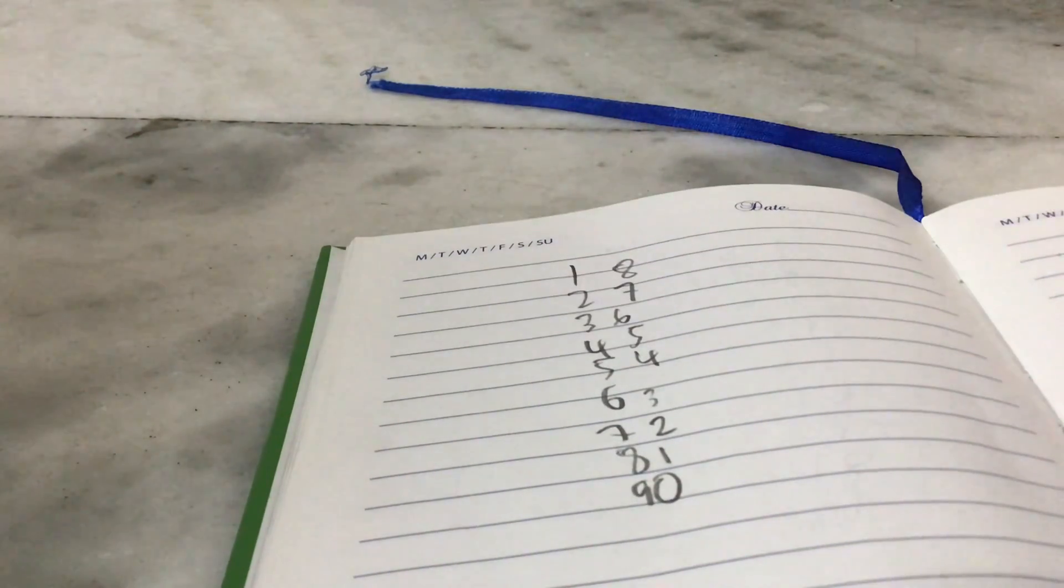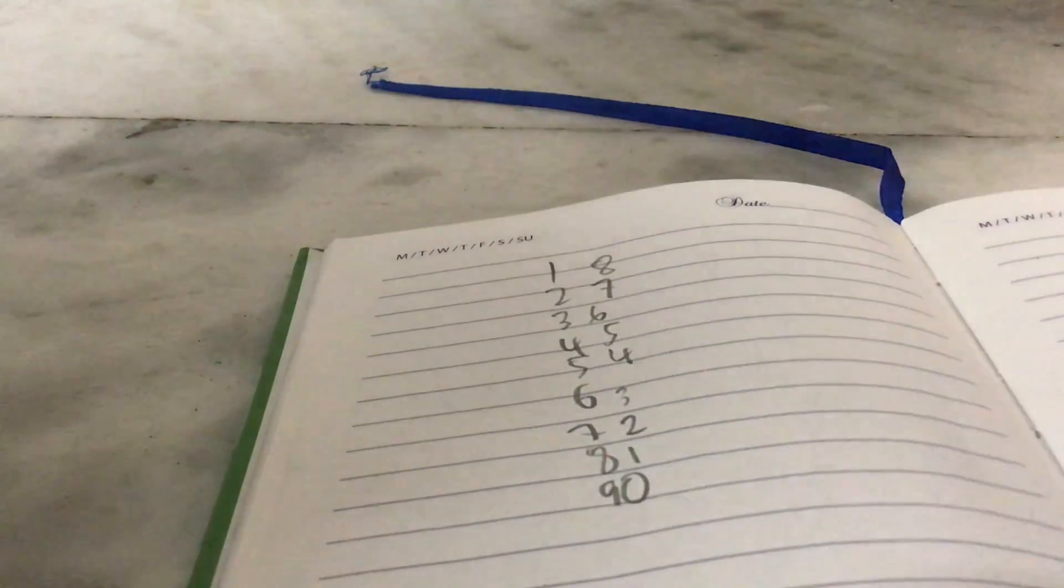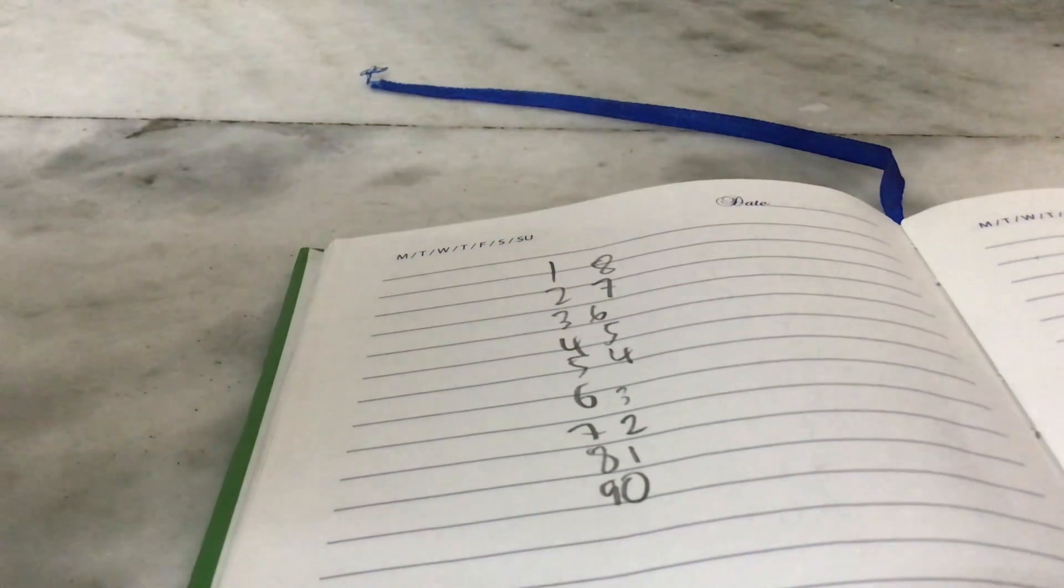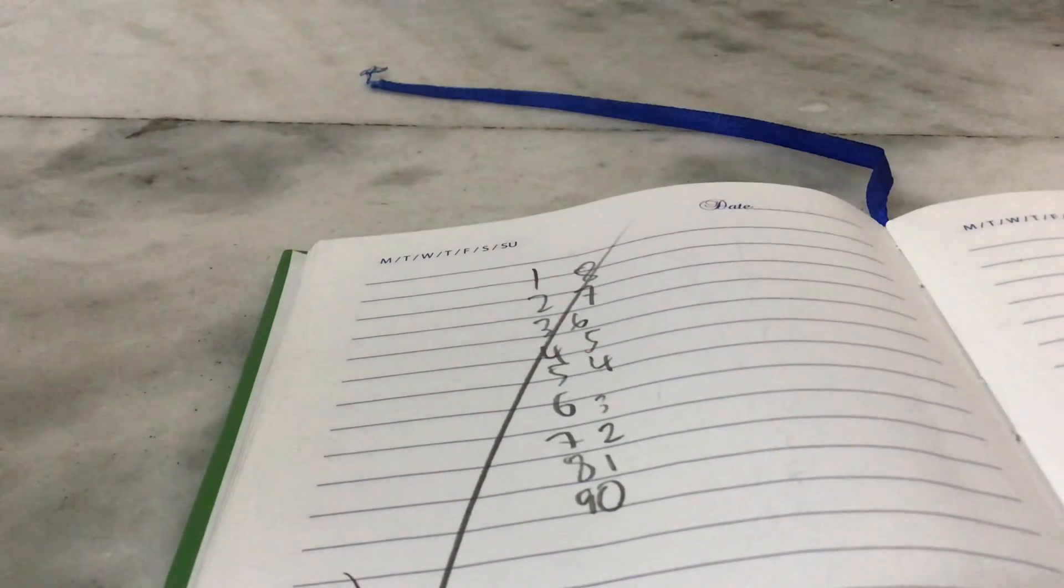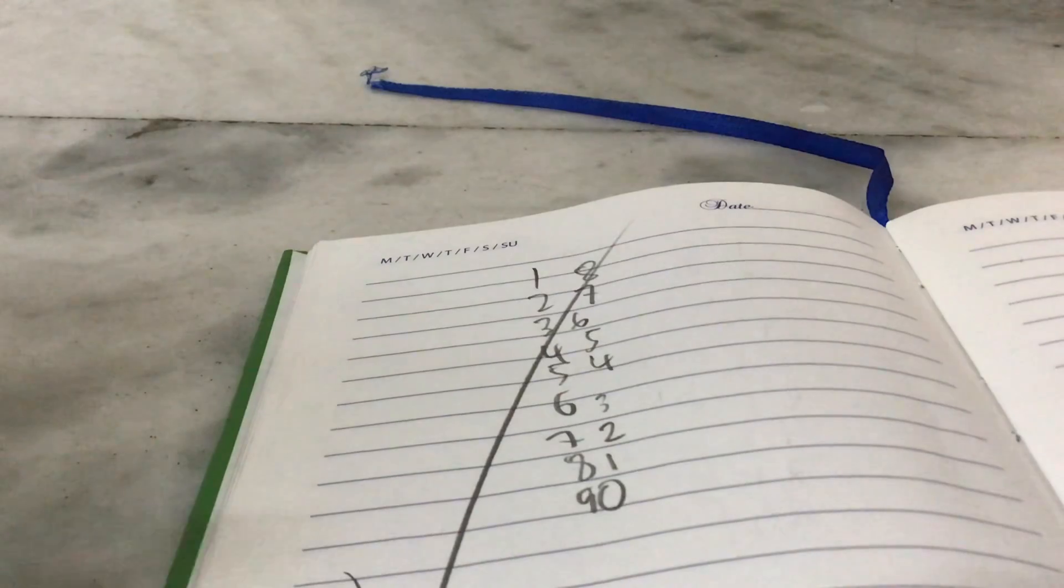Nine tens are ninety. So guys, maybe some of you might know the multiplication, but some of you might not know, so just watch this video for a trick. Yeah, so this is correct. Okay guys, thank you.